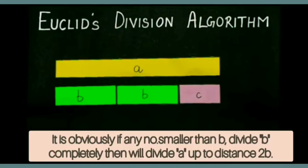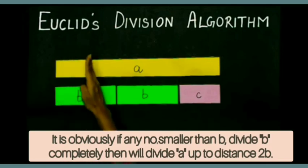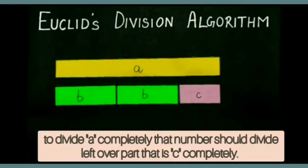Obviously, if number smaller than B divide B completely then will divide A up to the distance to B. To divide A completely, that number should divide leftover part that is C also completely.